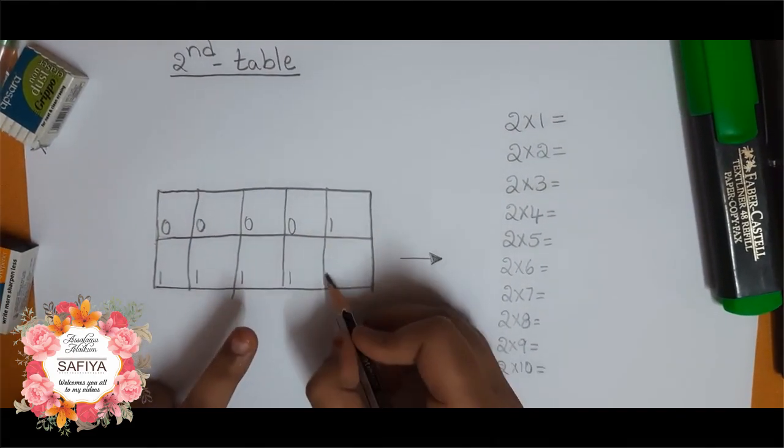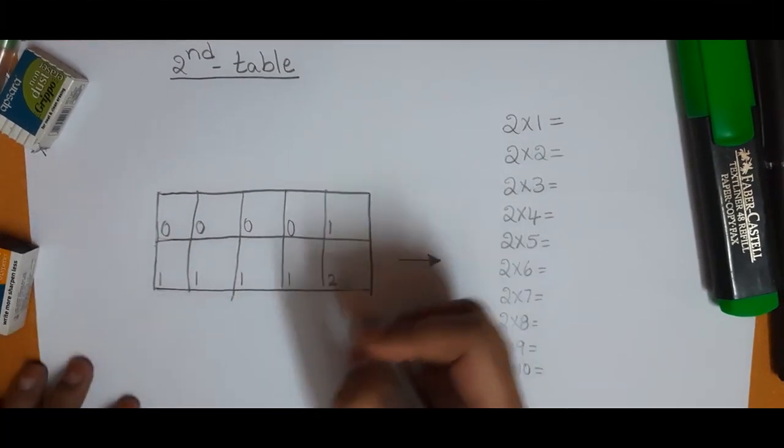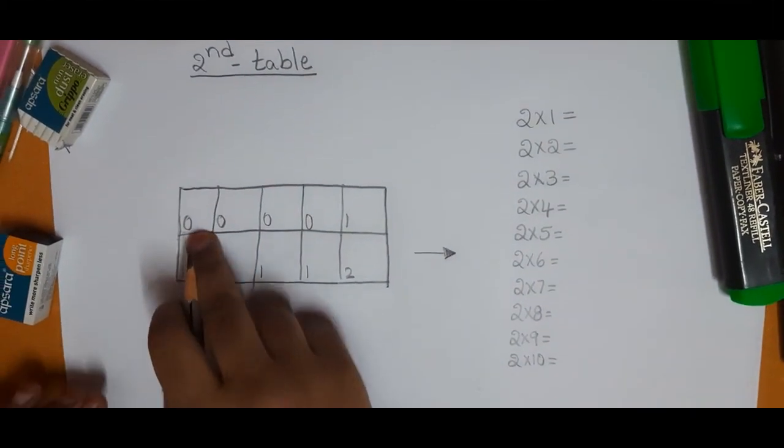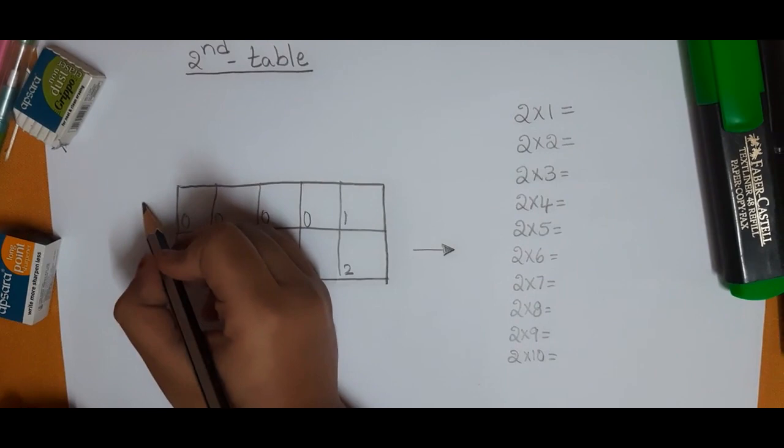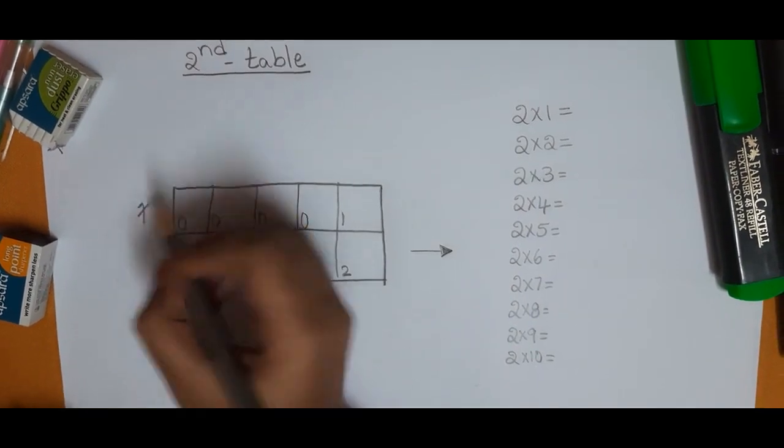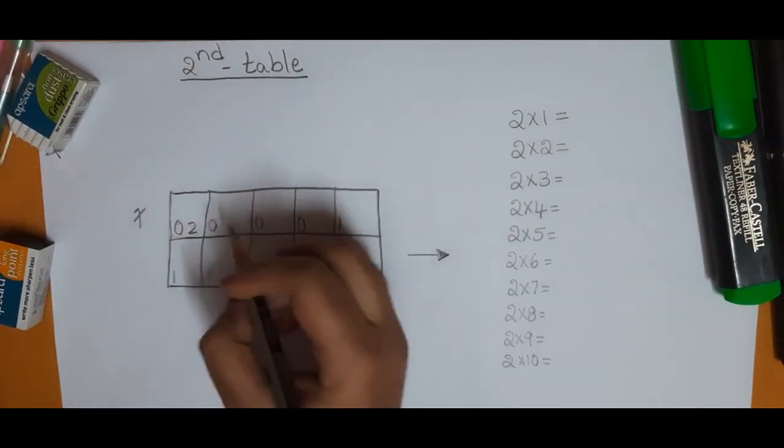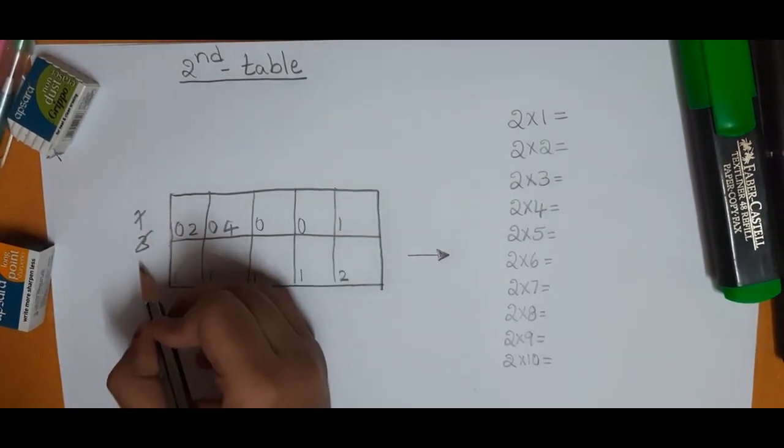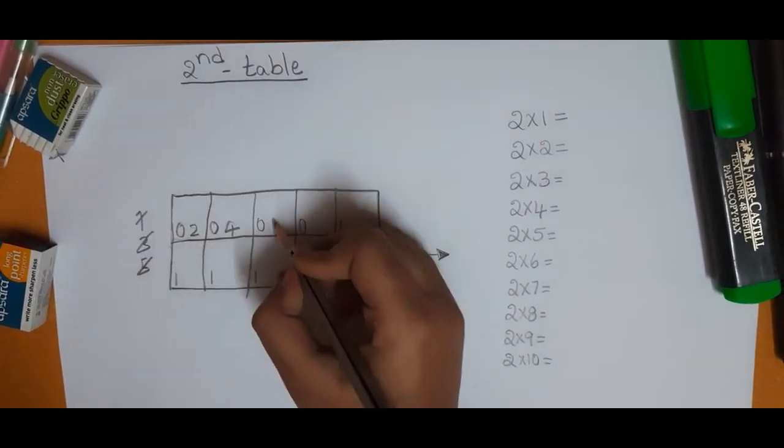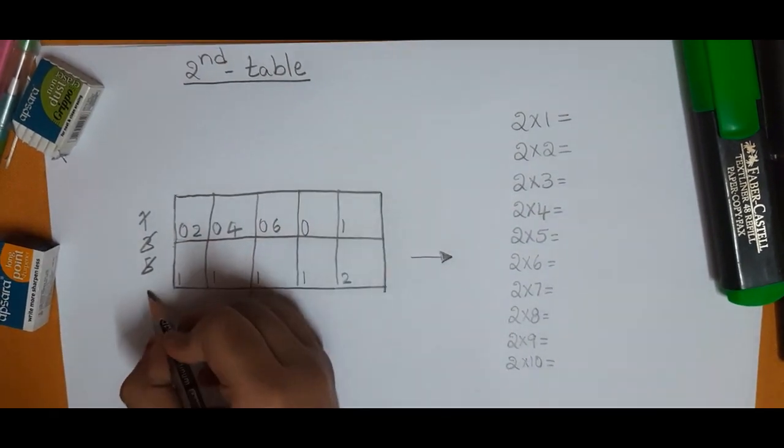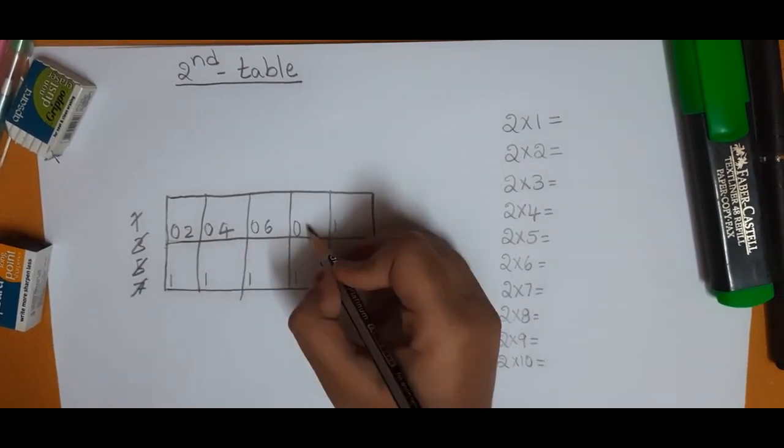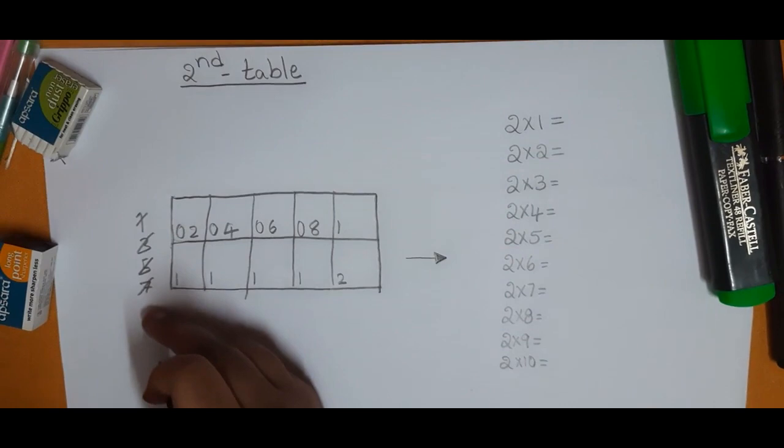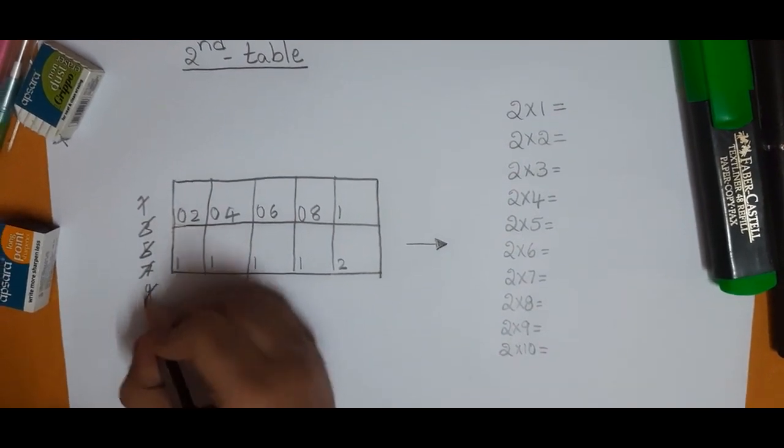Now two. Now start then one, skip two, then three, skip four, then five, skip six, then seven, skip eight, then nine, skip ten.